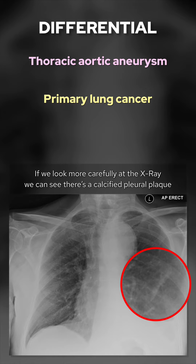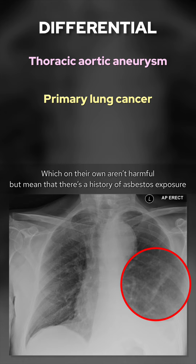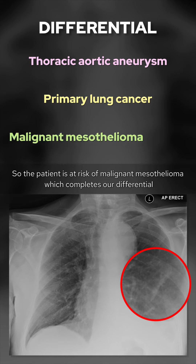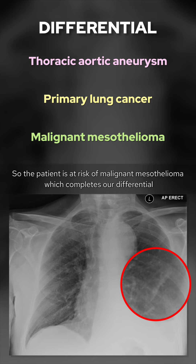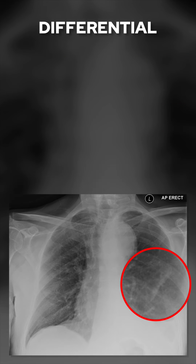If we look more carefully at the x-ray, we can see there's a calcified pleural plaque, which on its own isn't harmful but means there's a history of asbestos exposure. So the patient is at risk of malignant mesothelioma, which completes our differential.